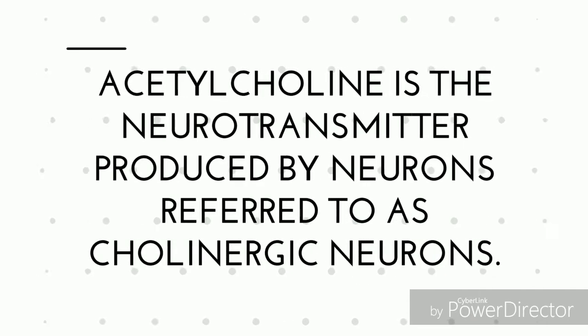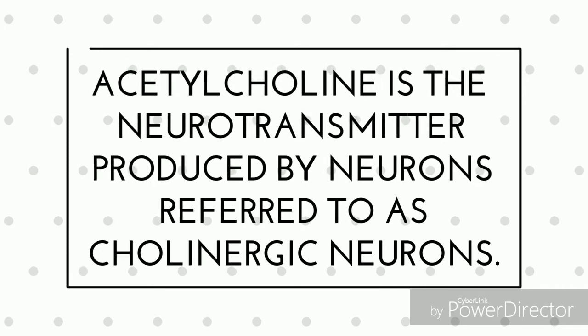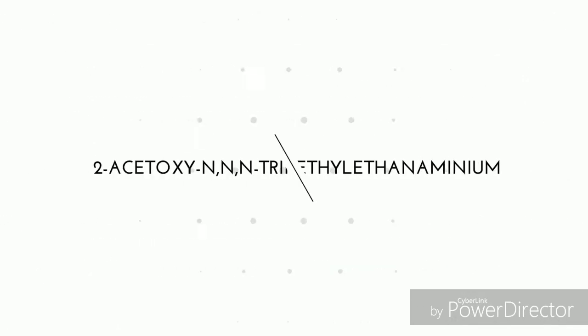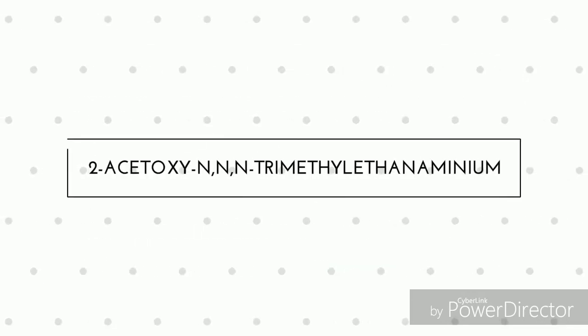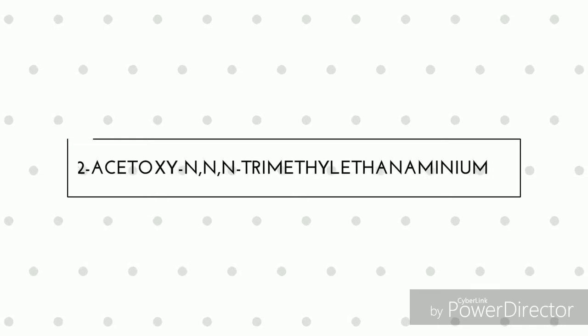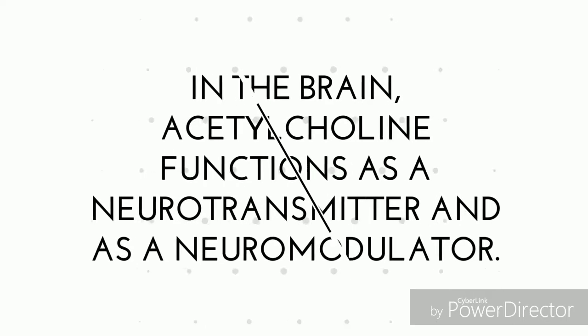Acetylcholine is the neurotransmitter produced by neurons referred to as cholinergic neurons. The IUPAC name of acetylcholine is 2-acetic-CN, N, N-trimethylethanaminium.